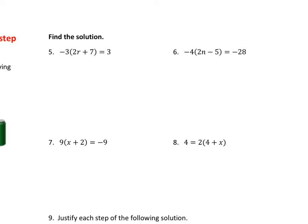Okay? First thing we're going to do is always draw a line. Classic move. We're going to check for distribution. I see that there's a negative 3 in front of parentheses, so I have to distribute. That's always step one. Negative 3 times 2r is negative 6r. And negative 3 times positive 7 is negative 21.